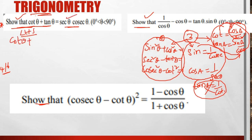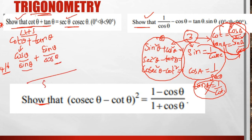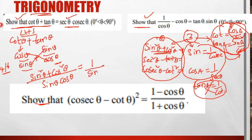LHS is cot θ + tan θ. Cot formula is cos θ/sin θ, and tan is sin θ/cos θ. The LCM of the denominator is sin θ·cos θ. So we get cos θ·cos θ + sin θ·sin θ over sin θ·cos θ, which gives cos²θ + sin²θ over sin θ·cos θ. Using identity 1, sin²θ + cos²θ = 1, so this equals 1/(sin θ·cos θ).